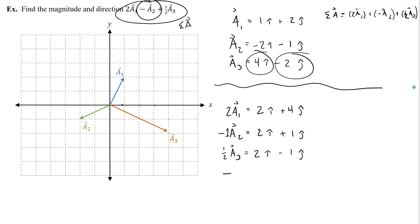Now I can sum all of the i's and then all of the j's. When I sum all of the i's, I get 2 plus 2 plus 2, or 6i. When I sum all of the j's, I'm going to get 4 plus 1 minus 1, or 4. And boom. Here I have the sum that we were asked to find in unit vector notation.